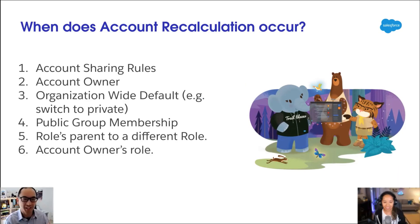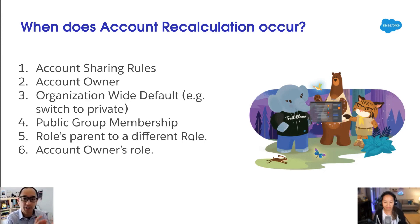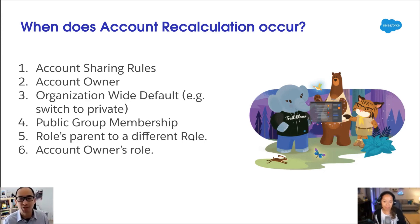First, let's set the stage. What does it mean for account sharing recalculation? It happens as you're adjusting account sharing rules, changing the account owner, perhaps switching the organization-wide default to private, adjusting group membership for a public group, or adjusting the role hierarchy. If you change the account owner's role, all of these cause sharing recalculations to kick off. We're focused on implicit sharing with this new faster sharing recalculation.